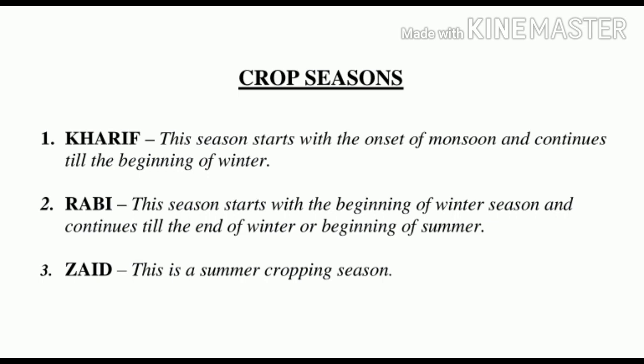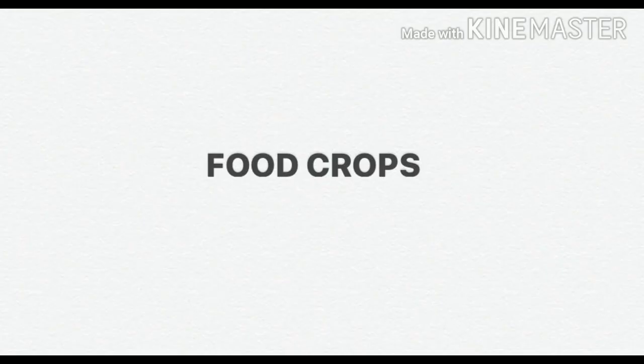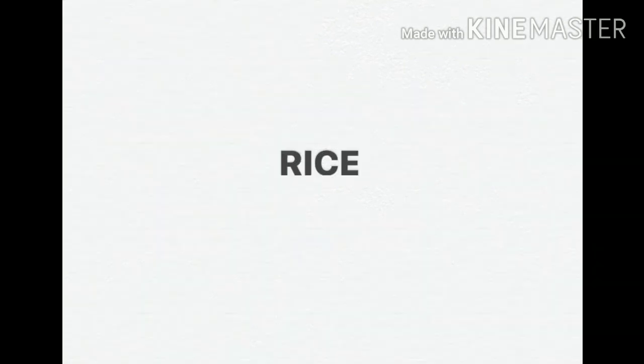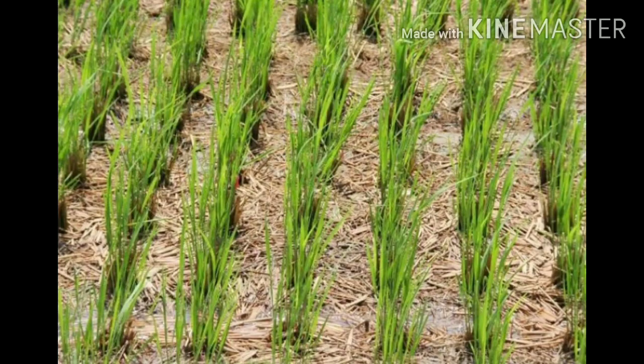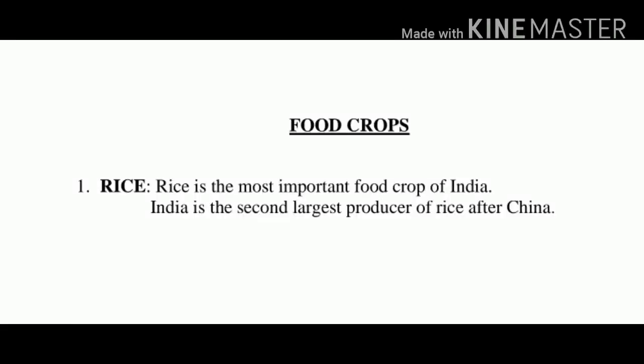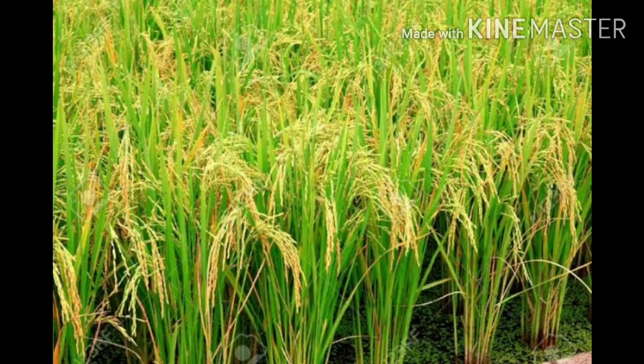Now let us talk about the major crops grown in India. Firstly, the food crops, and the first crop we are going to talk about is rice. Rice is the most important food crop of India. India is the second largest producer of rice in the world after China and contributes nearly one-third of the world's production of rice. Rice is the staple food of millions of Indians.